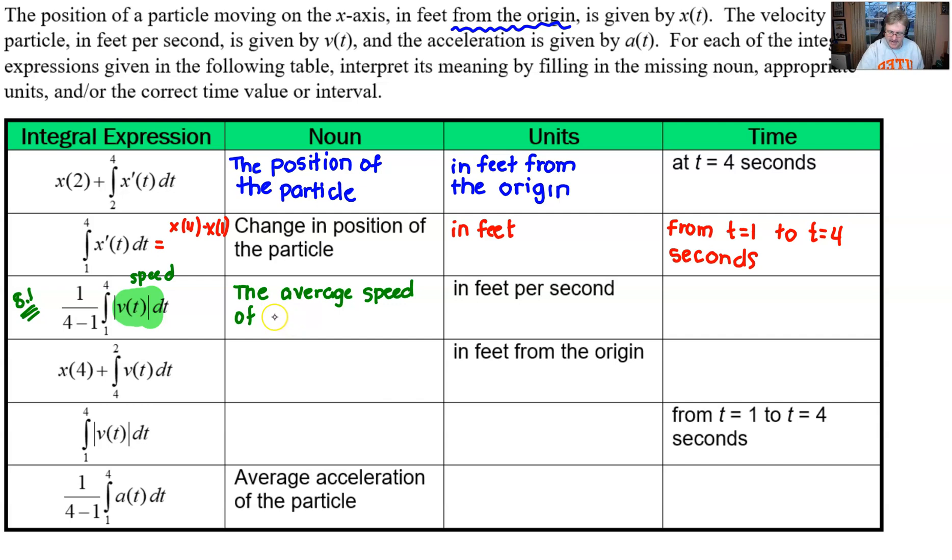Anytime that you see an integration of absolute value of v with this one over b minus a, you're probably looking at average speed every single time. So the average speed of the particle in feet per second. Average, we're kind of talking about over an interval. So you want to add that from t equal 1 to t equal 4 seconds.